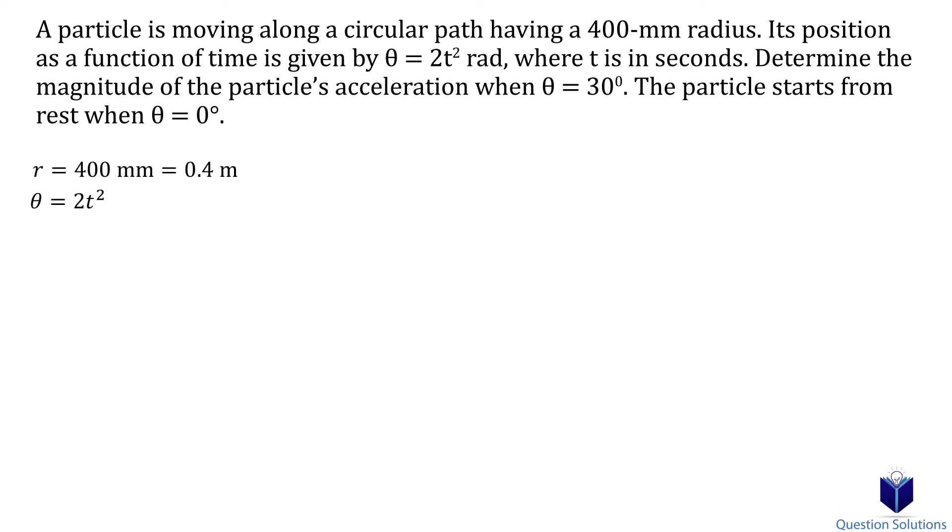Let's calculate how much time it took for the particle to go from 0 degrees to 30 degrees. First, we need to convert 30 degrees into radians. Let's plug that value into the position equation to figure out the time.